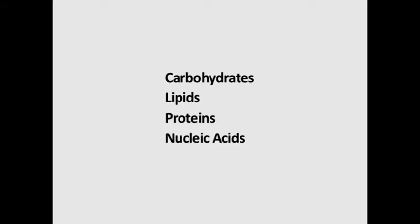Primary metabolites are organic compounds which are essential for the growth and development of plants. They are found universally in the plant kingdom and function as components or products of fundamental metabolic pathways or as precursors for the synthesis of secondary metabolites, and include carbohydrates, lipids, proteins and nucleic acids etc.